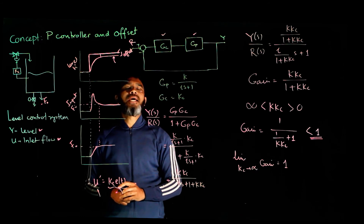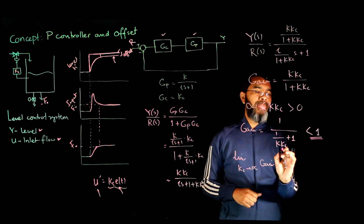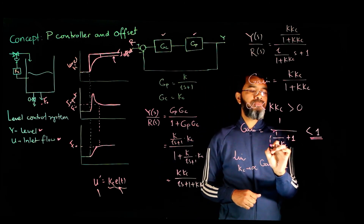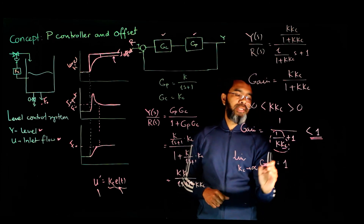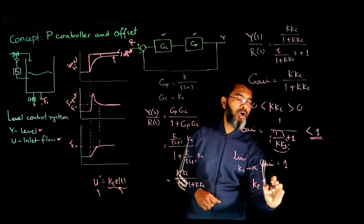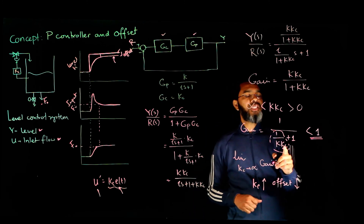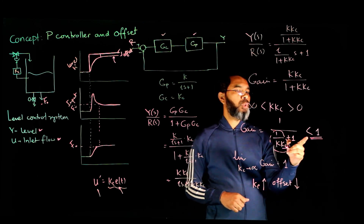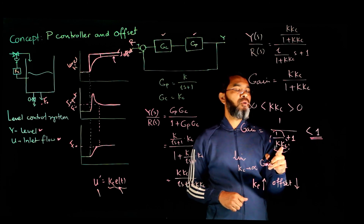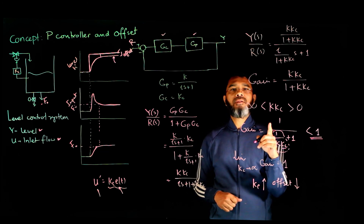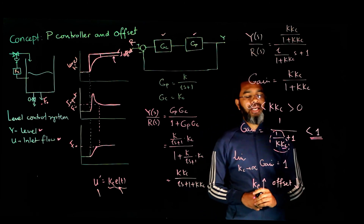As Kc increases, the term 1/(KKc) becomes smaller, so the gain approaches 1 and the offset decreases. With higher Kc, the gain gets closer to 1, and when Kc becomes infinite it equals 1. But for any finite Kc, increasing Kc will reduce the offset, though it cannot eliminate it entirely.